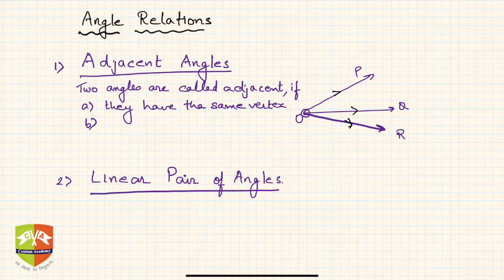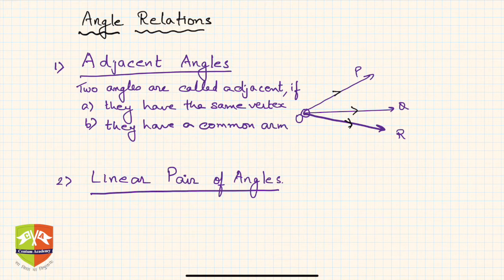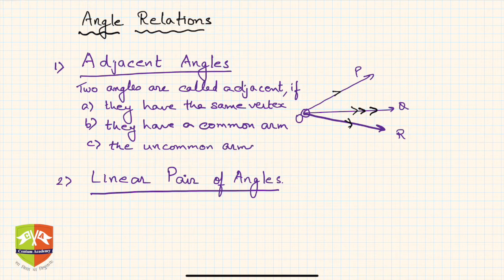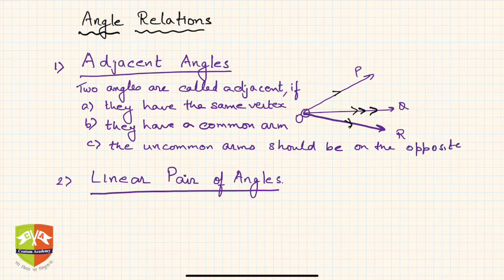The second condition is that they have a common arm. In this case, OQ is the common arm. The third condition is that the uncommon arms — OP and OR — should be on opposite sides of the common arm.